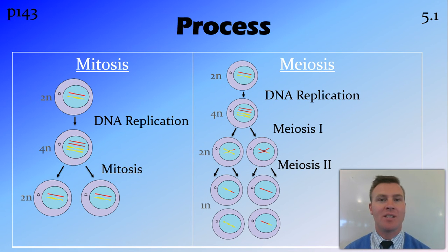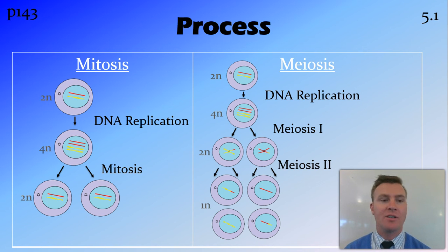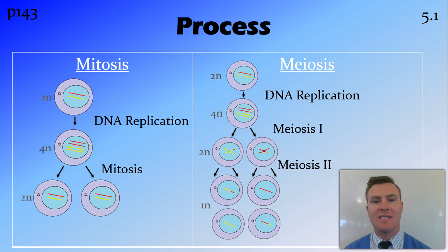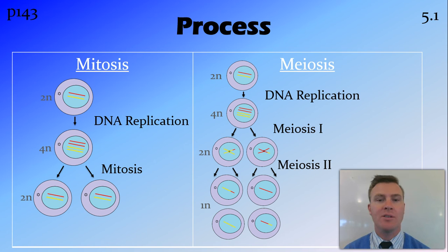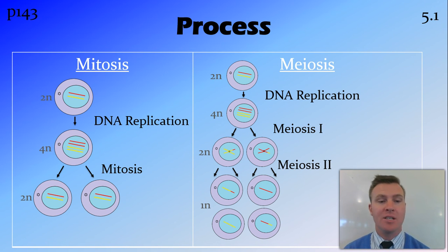The process by which these two forms of cell division occur: both have a process of DNA replication, and this takes us from a 2N cell to a 4N cell, where N is the number of distinct chromosomes inside the nucleus. For humans, N is 23, so most cells in the body have 46 chromosomes. When DNA replication occurs, this doubles and you end up with 92 chromosomes. Mitosis then splits this cell into two daughter cells, where each takes 46 chromosomes — back to 2N.